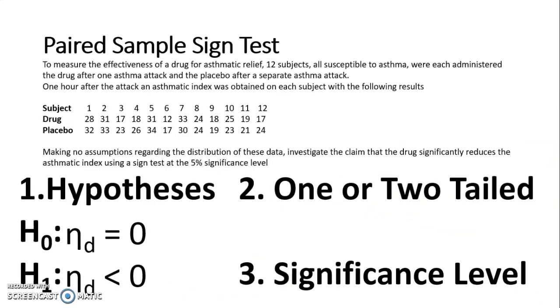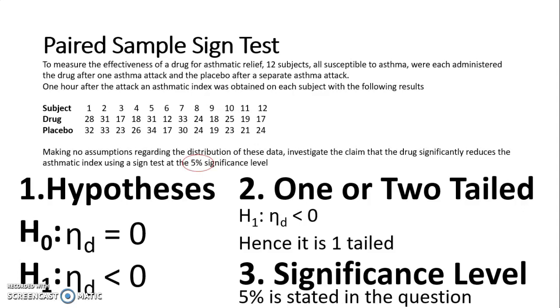Then to look if it's one or two tails, obviously we start with our alternative hypothesis, η_D is less than zero. So we're just looking at the one tail. And in the question, it states it is a 5% significance level.